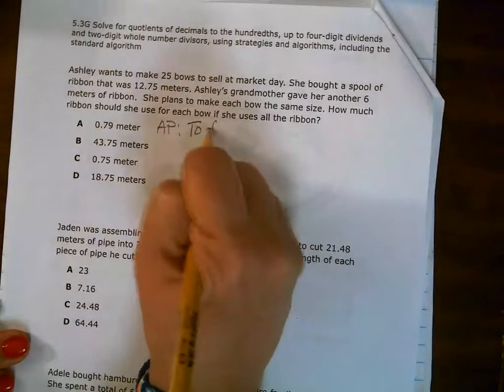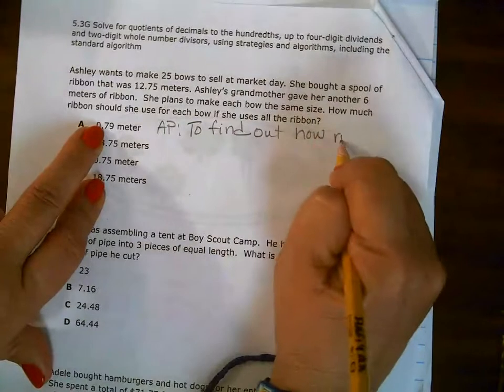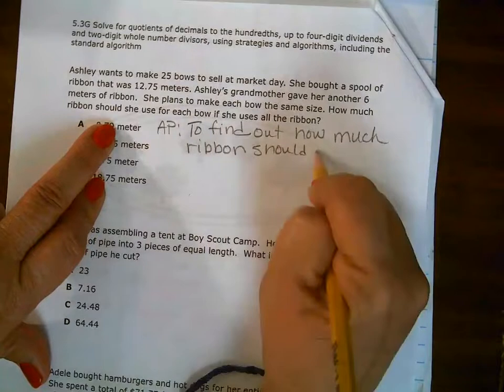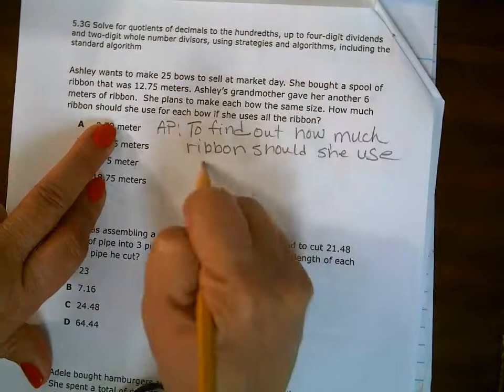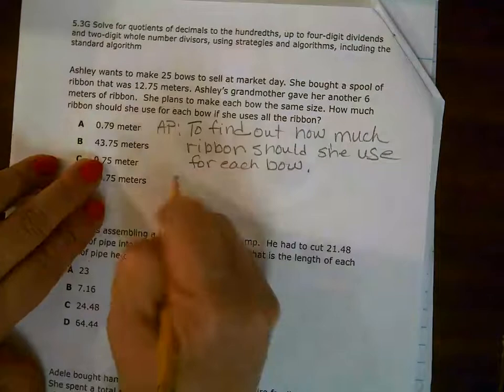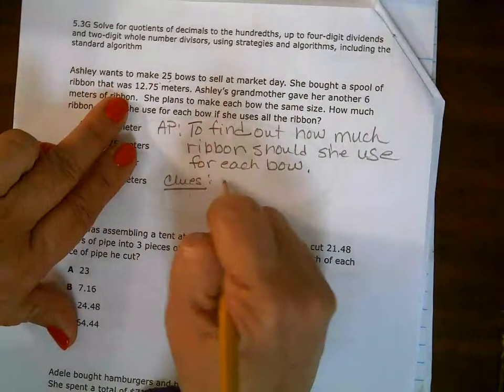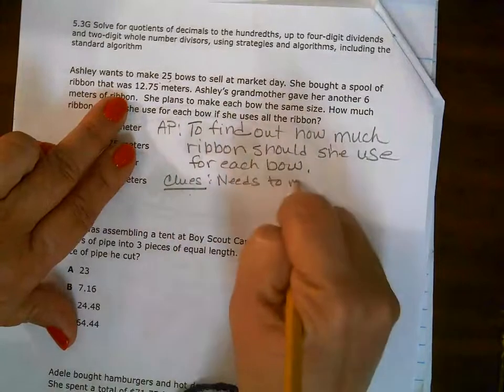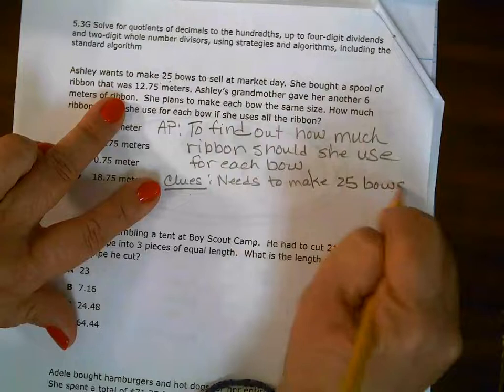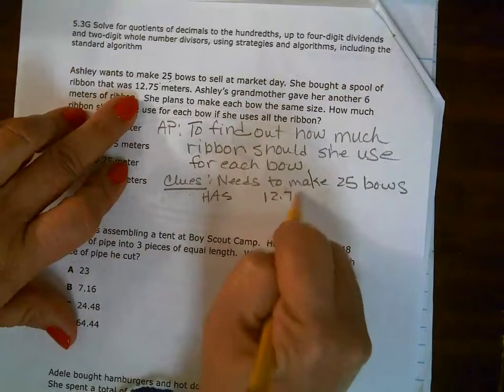Very good. Remember, you're using that keyword to find. So we need to find out how much ribbon should she use for each bow? Alright. Now this is what I have. So here's my clues. I know that she needs to make, or she wants to make, not a needs, but it's a wants to make 25 bows.